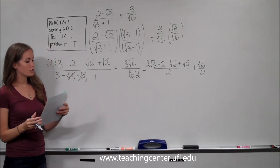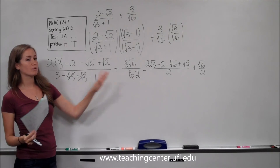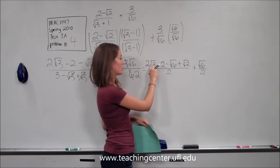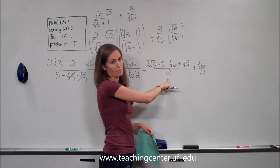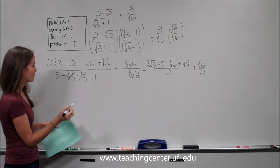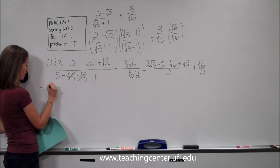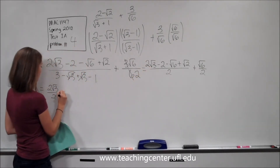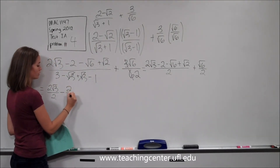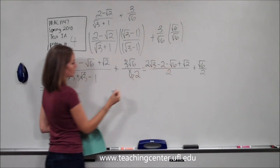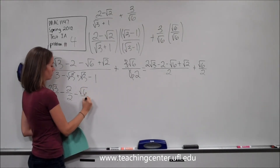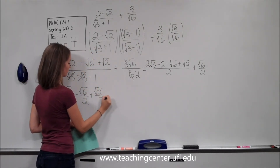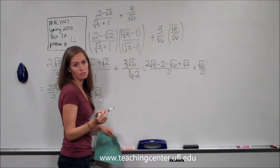Although we've rationalized it completely, we haven't finished simplifying. We want to write these as individual fractions instead of having them all over the same common denominator. So it becomes: 2 square root of 3 over 2, minus 2 over 2, minus square root of 6 over 2, plus square root of 2 over 2. And then we can't forget the second term, plus square root of 6 over 2.